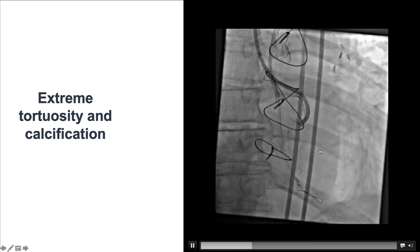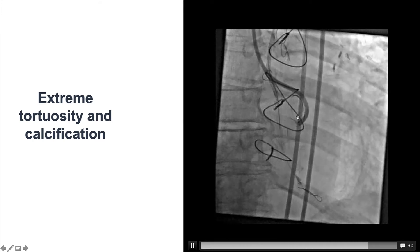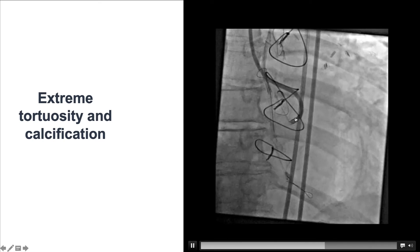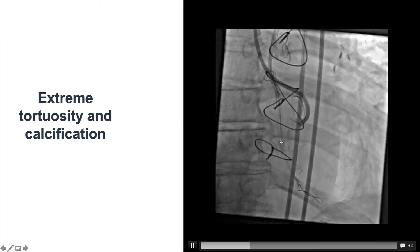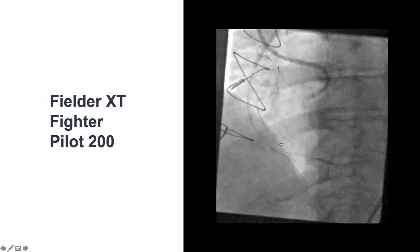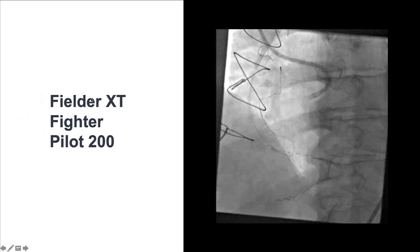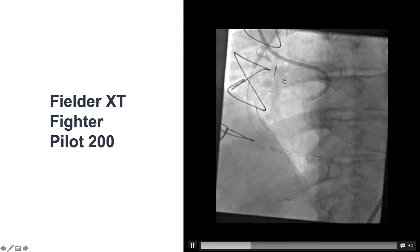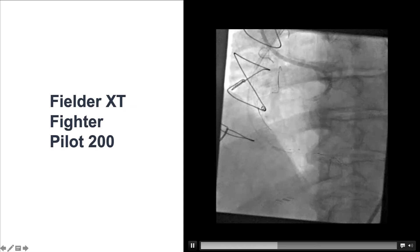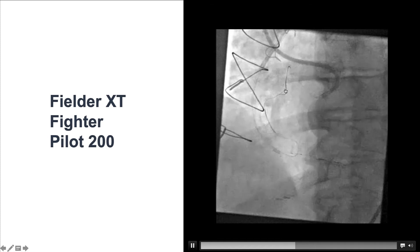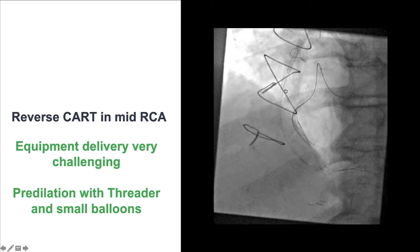We appreciated the extreme tortuosity and calcification — the vessel goes up, down, and turns to the left. It took several polymer-jacketed wires, including Filder XT, Fighter, and Pilot 200, to make progress and have them overlap with the retrograde guide wire advanced through the Caraval microcatheter.